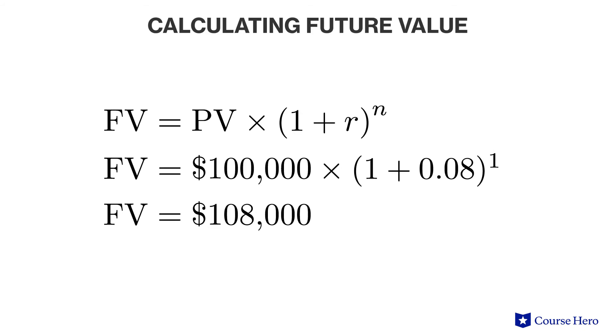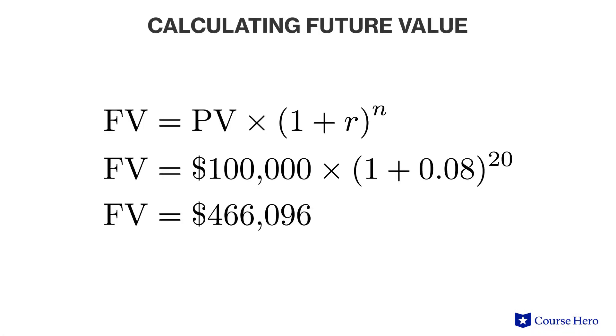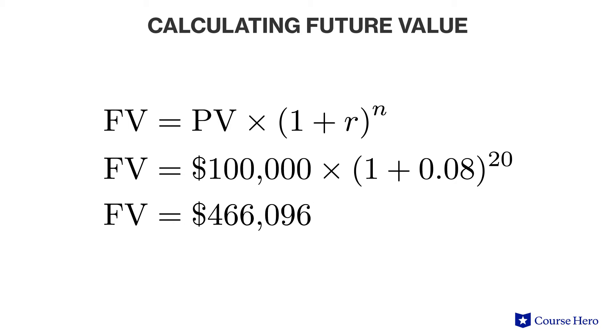The same process can be repeated if, instead of solving for present value, future value is what we're solving for. For example, Robert has $100,000 in hand today and can invest his money for one year at an 8% rate of interest. Using the same time value formula, the computation shows that his money will be equal to $108,000 a year from now. Assume that Robert has $100,000 in hand today and can invest his money for 20 years at an 8% rate of interest. Using the same time value formula, his money will be equal to $466,096 twenty years from now.